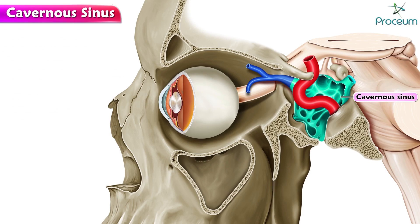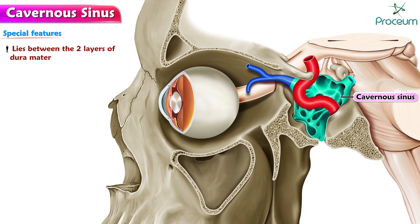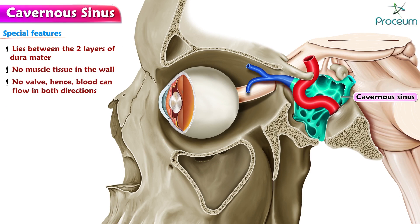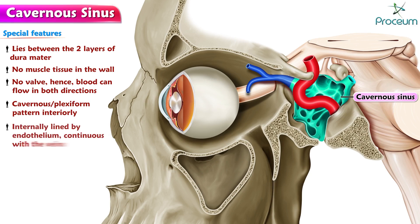Next we're going to learn about the special features of the cavernous sinus. It lies between the two layers of the dura mater. There is no muscle tissue in the wall. There is no valve, hence blood can flow in both directions. There is a cavernous or plexiform pattern interiorly. It is internally lined with endothelium, which is continuous with the veins.